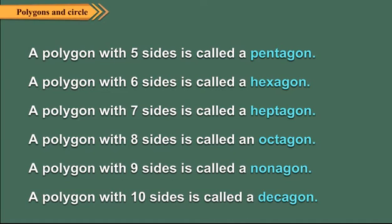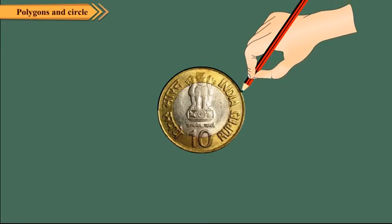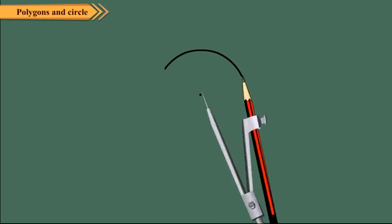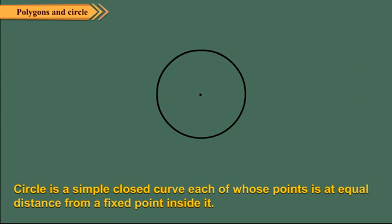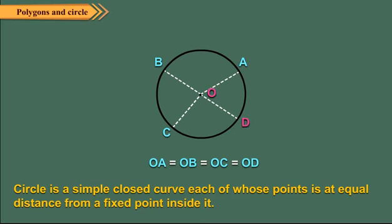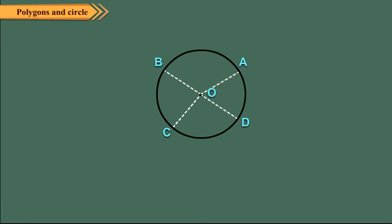In the previous class, you have also read about circles. We can draw a circle by tracing the outlines of circular objects, or by using a compass. A circle is a simple closed curve, each of whose points is at an equal distance from a fixed point inside it. Here, OA equals OB equals OC equals OD, meaning every point on the curve is at an equal distance from fixed point O, so the closed curve is a circle. The fixed point O is the center of the circle, and the distance OA, OB, OC, or OD is called its radius. All radii of a circle are equal.